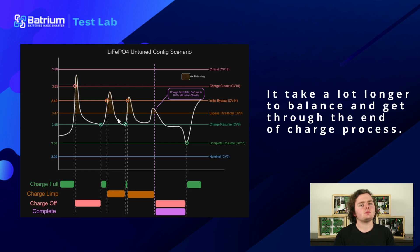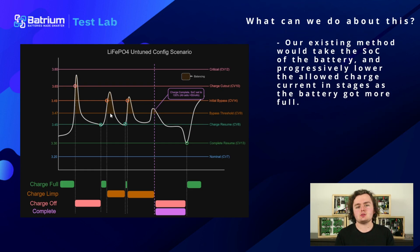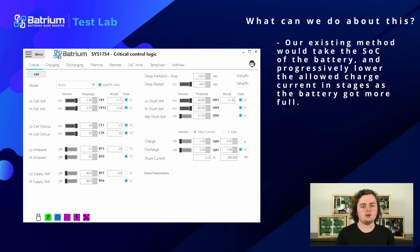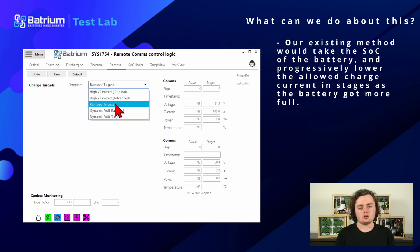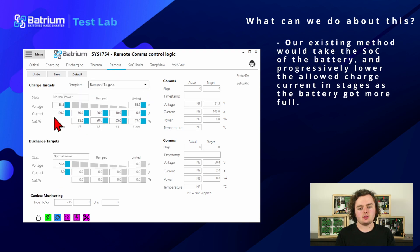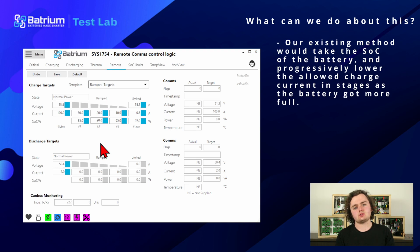So what can we do about this? Our existing method would take the state of charge of the battery and progressively lower the allowed charge current in stages as the battery got full. That's over here in remote and it's called ramp targets. It sets progressively smaller values as the state of charge gets closer and closer to full. It's one way of doing it, but it's a bit complicated, doesn't work for all systems, and also relies on charts.